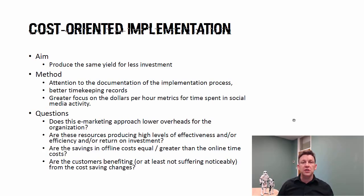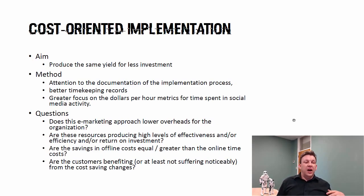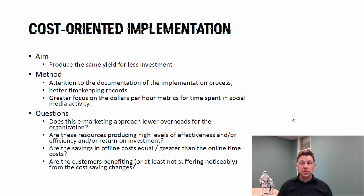The first issue is cost-oriented implementation, where you want the same sort of outcome but for less investment. This is where we address the question of marketing being a cost. We say: for an investment of X dollars, you get Y outcome — where Y equals yield. The method of putting this implementation together starts with documentation: timekeeping, implementation records. Are we spending the same number of hours or less? Are we spending the same dollar per hour? What are the metrics telling us about our success?